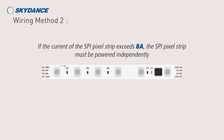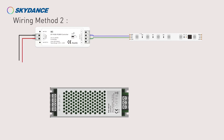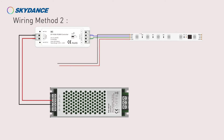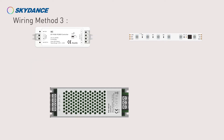If the current of the SBI pixel strip exceeds 8A, the SBI pixel strip must be powered independently. Wiring method 3.